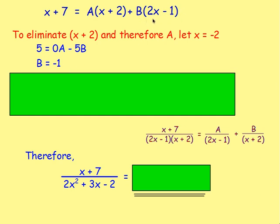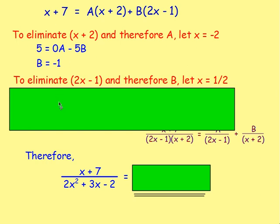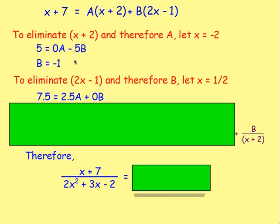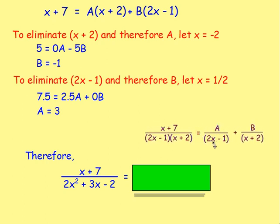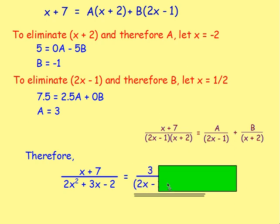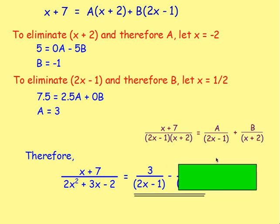To get 0B, let x = 1/2. Then 1/2 + 7 = 7.5, and (1/2) + 2 = 2.5, so 7.5 = 2.5A, meaning A = 3. We can now replace A and B with these values: 3 over (2x − 1) plus (−1) over (x + 2), which we write as 3/(2x − 1) − 1/(x + 2). So we've expressed that in partial fractions.